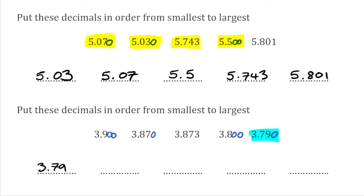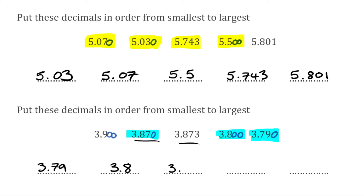Comparing again — first digit is 3, second digit we've got 9, 8, 8, 8. Out of the three 8s, we move along to the third digit where we've got a 7, a 7 and a 0. So it's going to be 3.800 — we write 3.8. Now looking at the two remaining 8s as the second digit, with 7 as the third digit, we move to the fourth digit. The fourth digit in the first one is 0 and the second one is 3, so the smallest is 3.870 — we write 3.87.